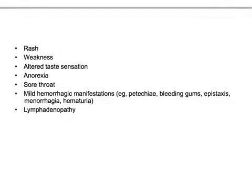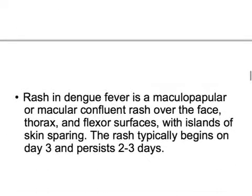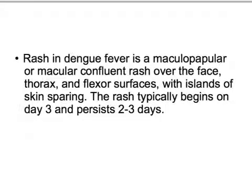A characteristic maculopapular rash with petechiae and blanching can be present. Other symptoms include weakness, altered taste sensation, anorexia, sore throat, and mild hemorrhagic manifestations such as petechiae, bleeding gums, epistaxis, menorrhagia, and hematuria. These occur because of thrombocytopenia — the platelet count can drop below 20,000. You should also be aware of endemic areas near your office.